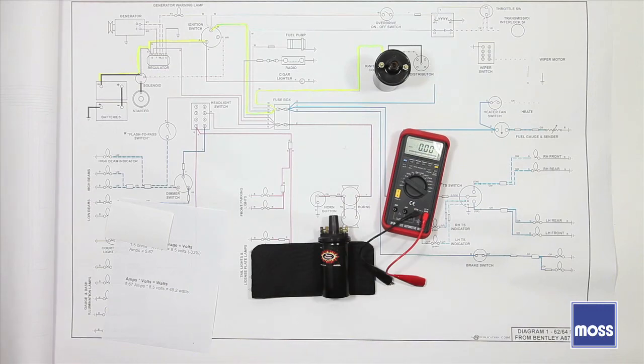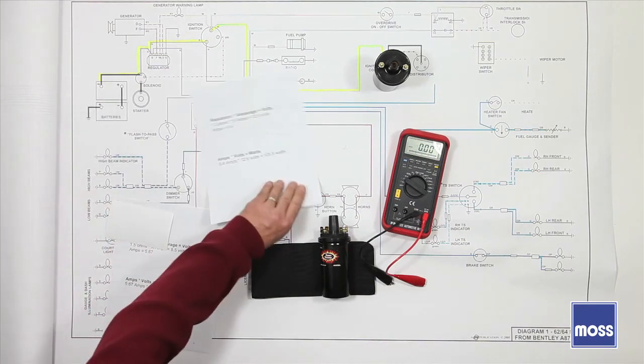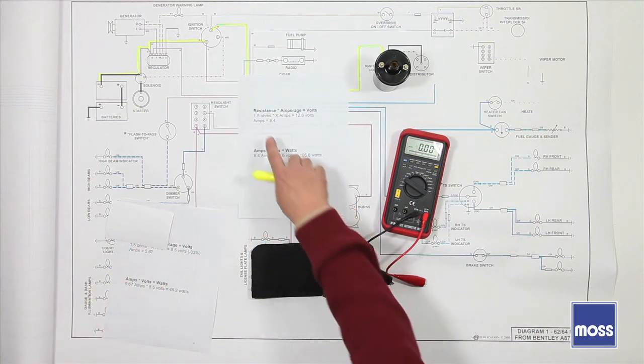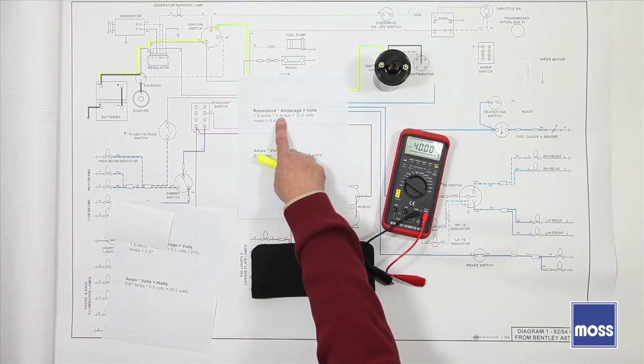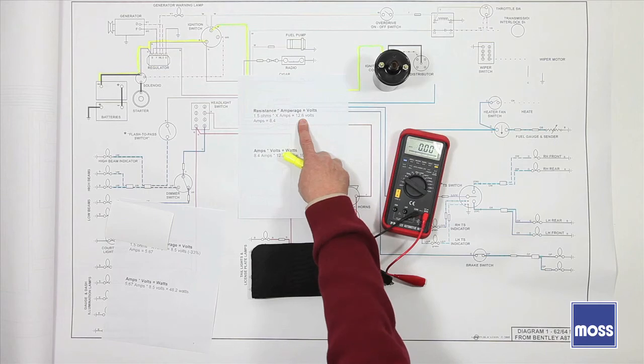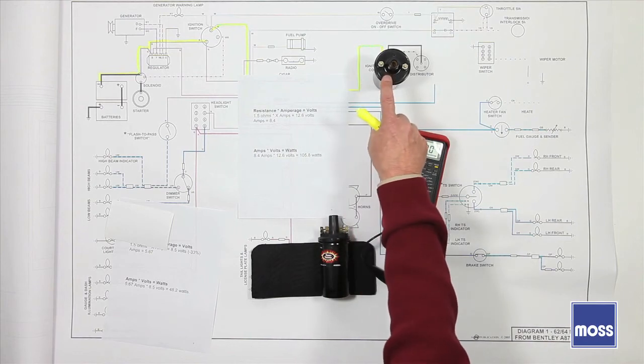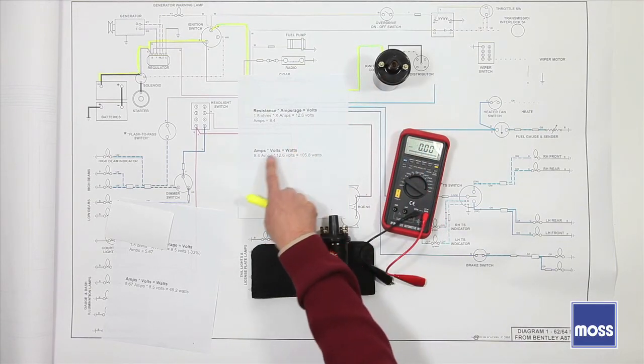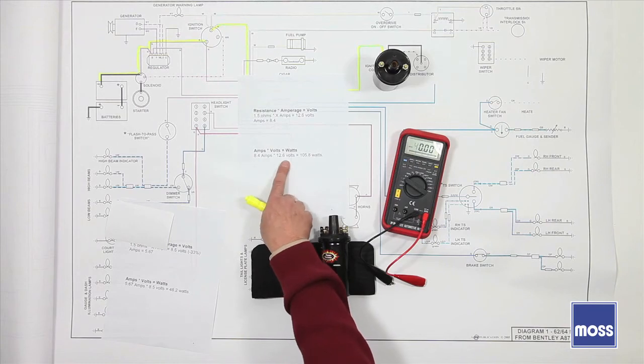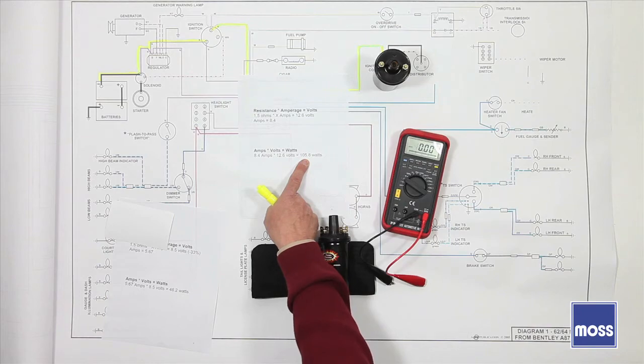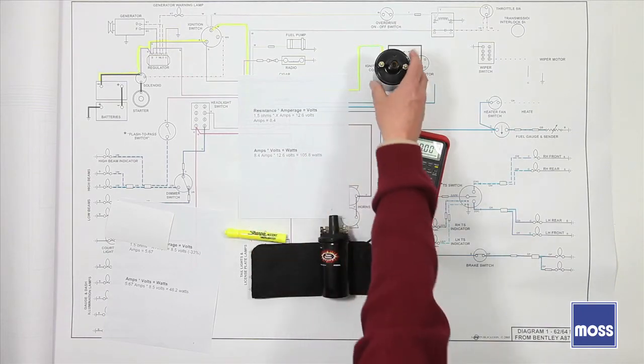We take this: remember, we've got a 1.5 ohm coil, we don't know the amperage yet, and she's going to go up to say 12.6 volts. She's recovered herself. That's going to be 8.4 amps rolling through this coil. Amps times volts equals watts. 8.4 amps times 12.6 volts is going to give us 105.8 watts. That's double your 50 watt headlight. Twice the energy is going to be going through this.